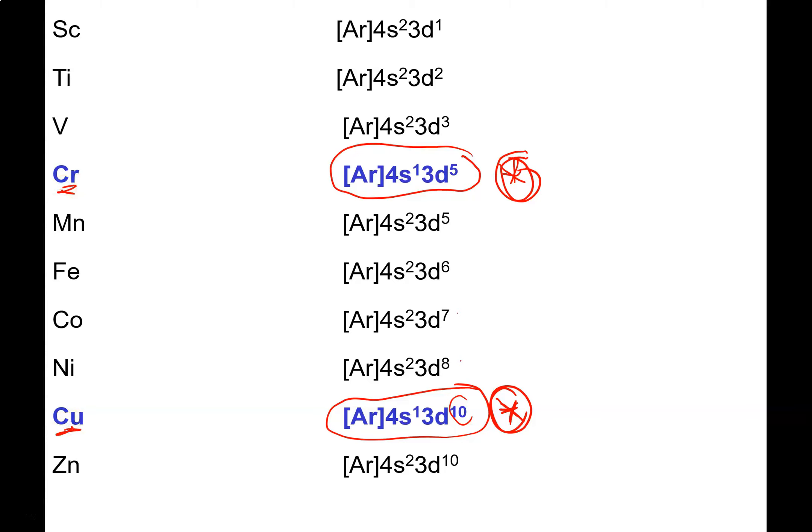You do need to memorize these. What's happened here, instead of it being 4S2 3D4, an electron has been borrowed from the 4S subshell and put into the 3D to give us the configuration 4S1 3D5. The same has happened for copper - instead of it being 4S2 3D9, an electron has been stolen from the 4S subshell and moved over into the 3D subshell.